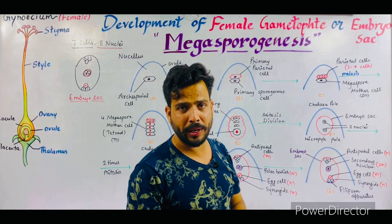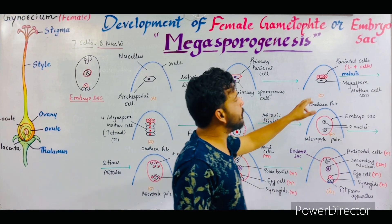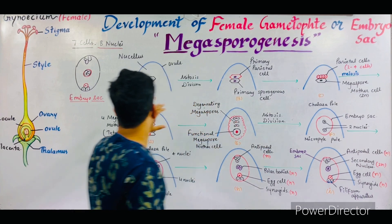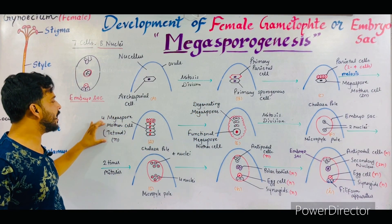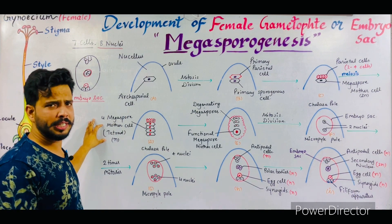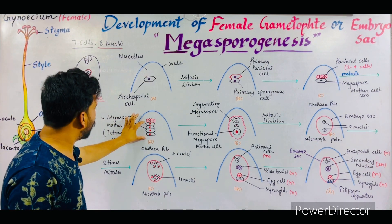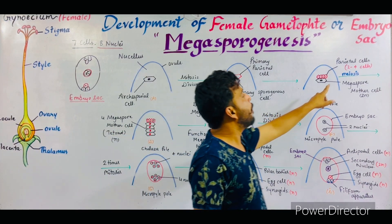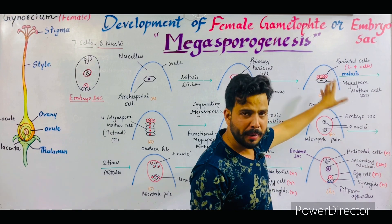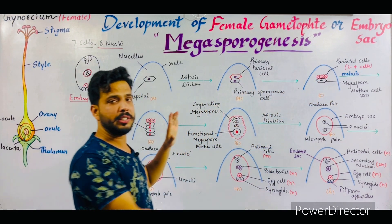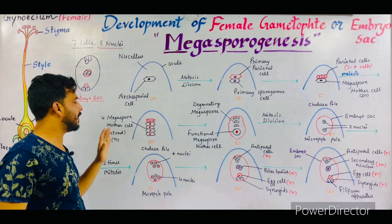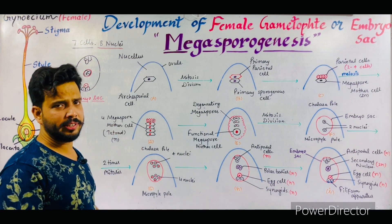After that, this megaspore mother cell divides by meiosis division, and with the help of meiosis division it produces four megaspores in the form of a tetrad — tetrad means a group of four cells. These are the four megaspores which are formed by the meiosis division of the megaspore mother cell. So this was the single megaspore mother cell, and after division four megaspores are produced, found in the form of a tetrad.